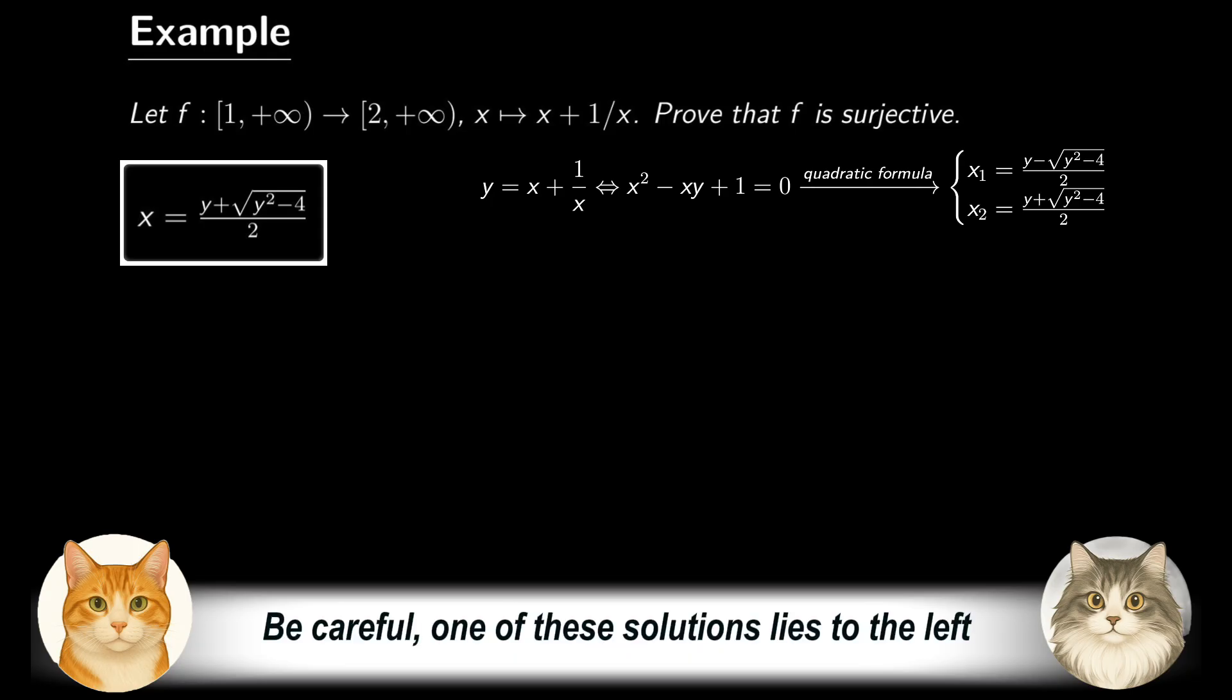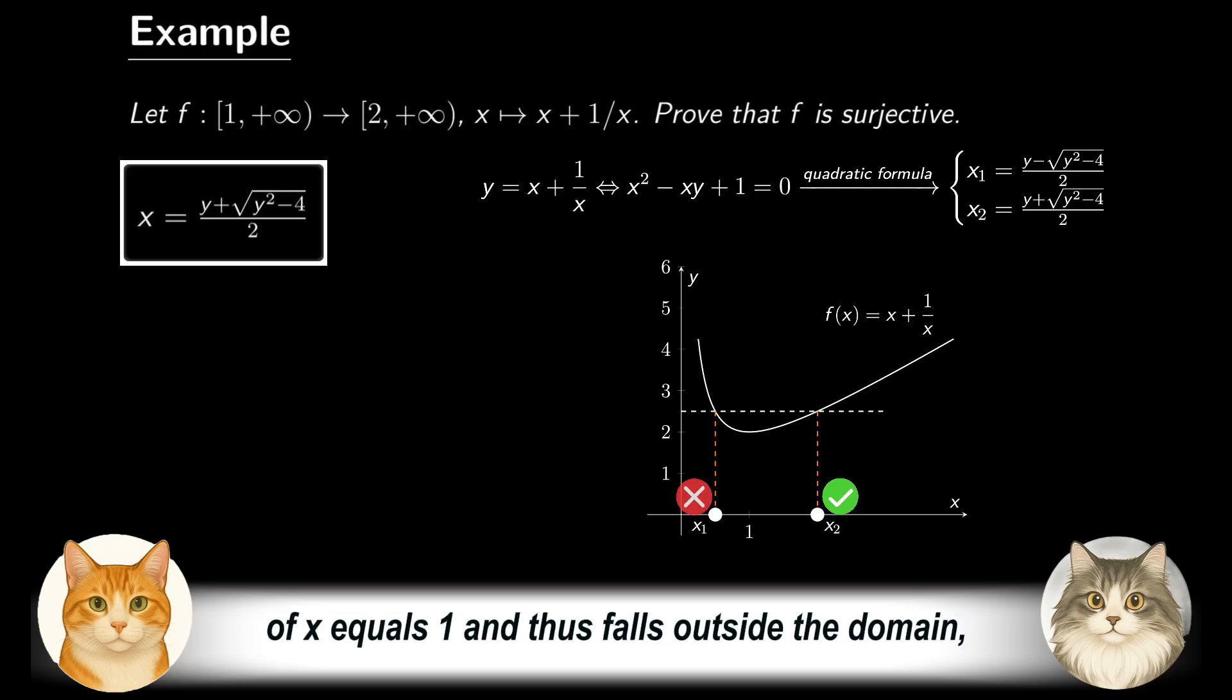Be careful! One of these solutions lies to the left of x equals 1, and thus falls outside the domain. So it must be dropped. The remaining solution is therefore our unique ideal candidate.